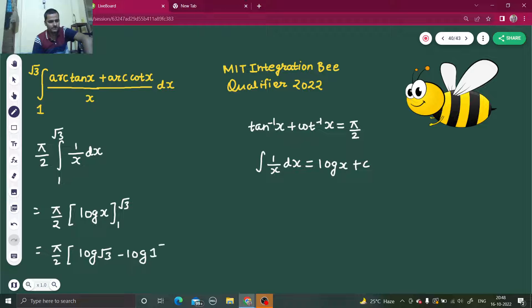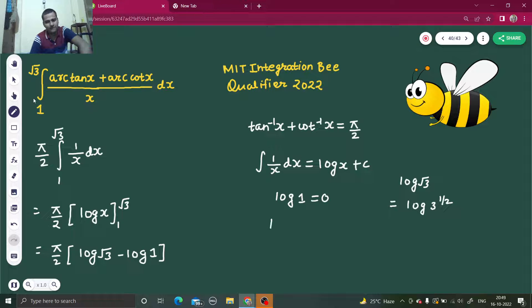Put the upper limit so log root 3 minus the lower limit log 1. Now we know that log 1 is 0 and log root 3 can be written as log 3 to the power half. We know the property of log that log x power n, if that is there, so n can jump and come in front, so you get n log x.